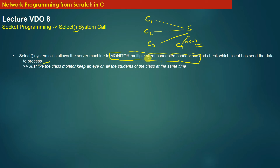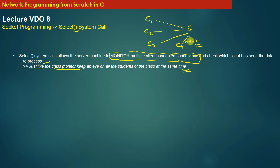You can relate it to this example: just like a class monitor keeps an eye on all the students of the class at the same time, using the select system call the server also keeps an eye on all the file descriptors of connected clients, as well as monitoring the arrival of new connection initiation requests from new clients, and can take appropriate action.